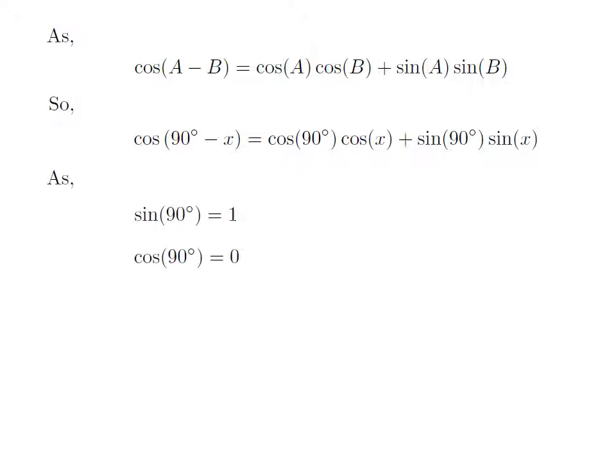As we know, sine of 90 degree is equal to 1 and cosine of 90 degree is equal to 0.